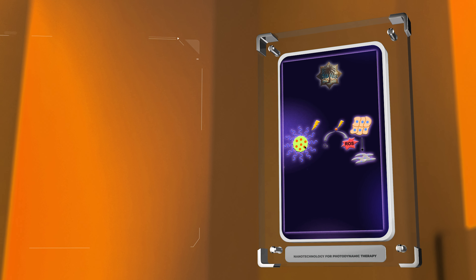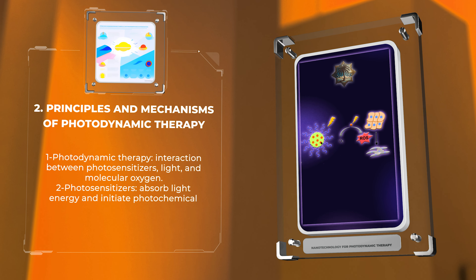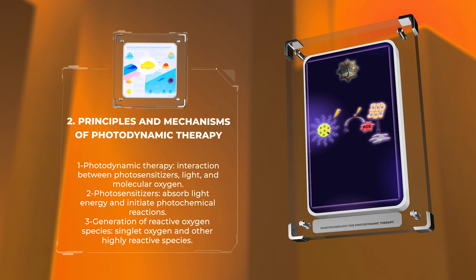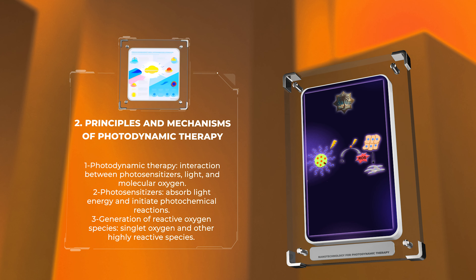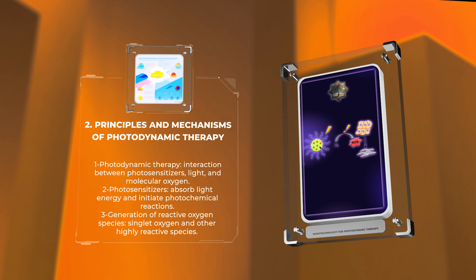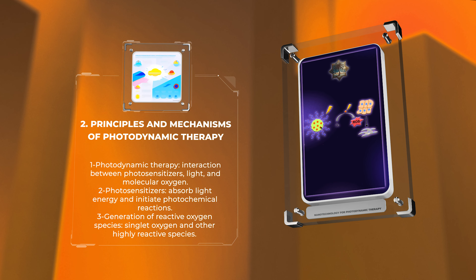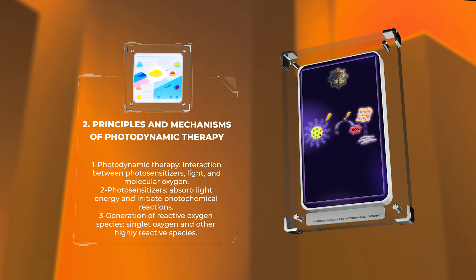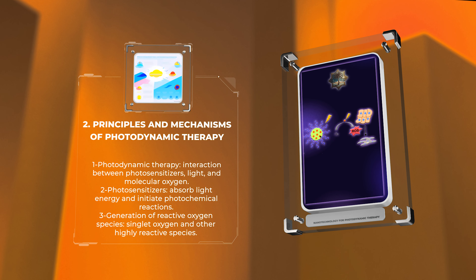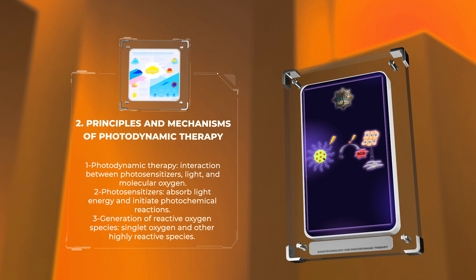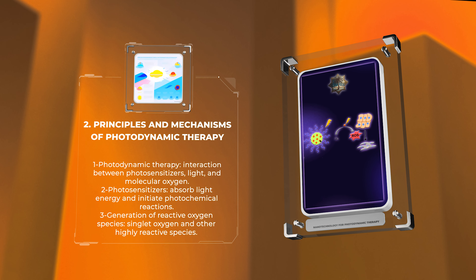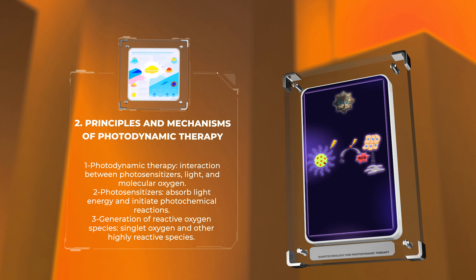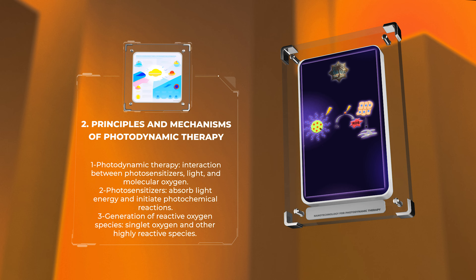Photodynamic therapy relies on the interaction between photosensitizers, light, and molecular oxygen to produce cytotoxic reactive oxygen species that selectively destroy target cells. Upon activation by light of a specific wavelength, photosensitizers in the presence of oxygen undergo a series of photochemical reactions that generate singlet oxygen and other highly reactive species. These reactive species cause damage to cellular components, leading to tumor cell death or eradication of infectious agents. The precise mechanisms of action may vary depending on the specific photosensitizer and target.